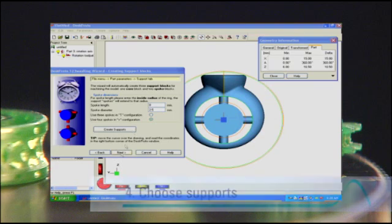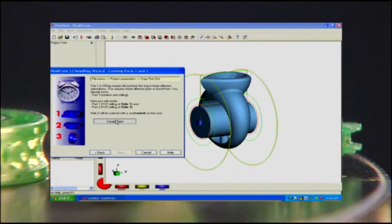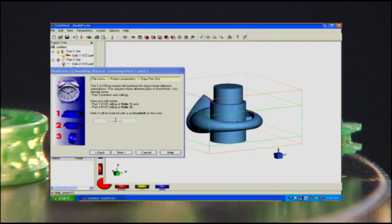The wizard will place a core cylinder and three or four spokes inside the ring. These are the support blocks. You can set both the length and the diameter of the spokes.